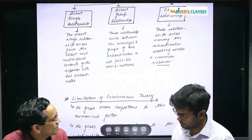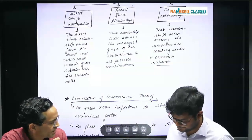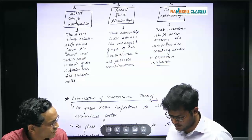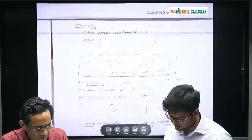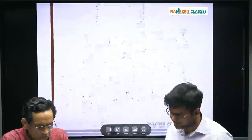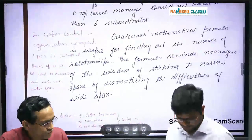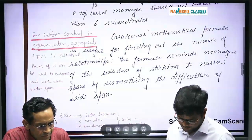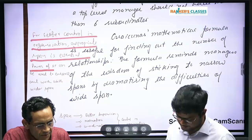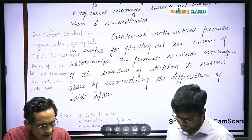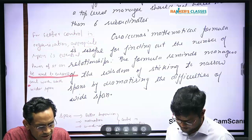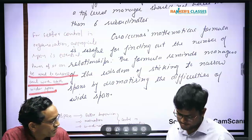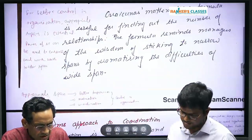It is covered well. In conclusion, you should write that for better control in an organization, an appropriate span is essential. The power of IT can be used to increase or enhance span and work with a wide span — that could be written as a concluding point.